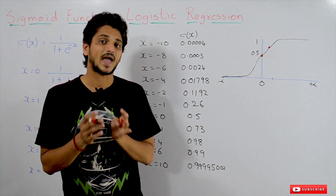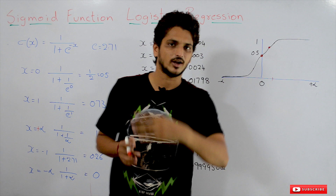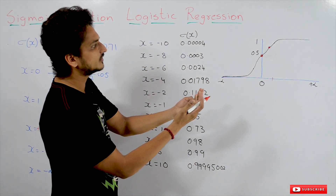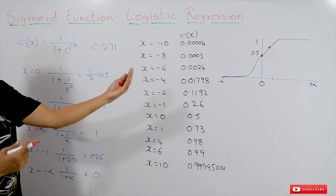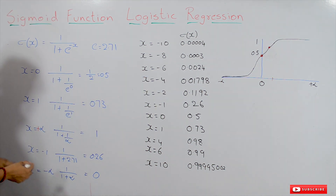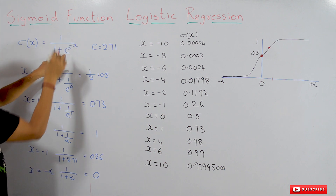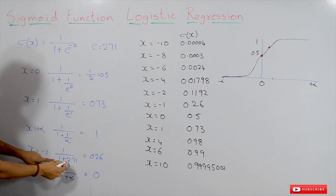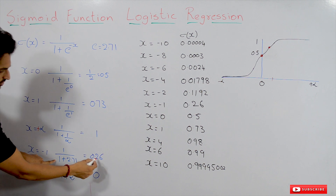So the maximum value we get in the sigmoid function is 1. Now let's analyze how it behaves towards the negative side. At x equals minus 1: 1 divided by 1 plus e to the power minus of minus 1, which is e to the power 1. e to the power 1 equals 2.71, so 1 divided by 1 plus 2.71 equals approximately 0.26.